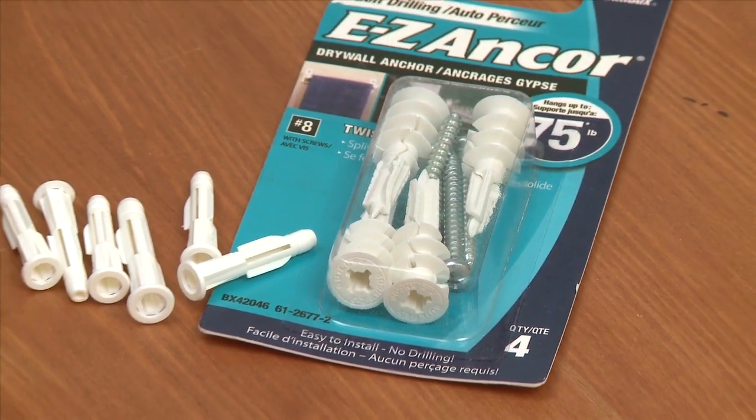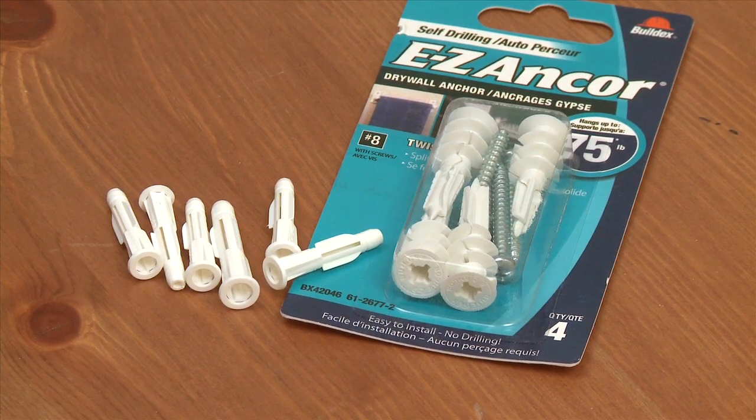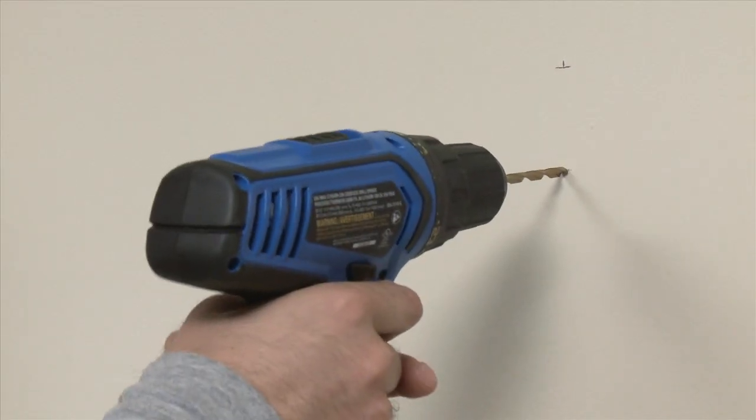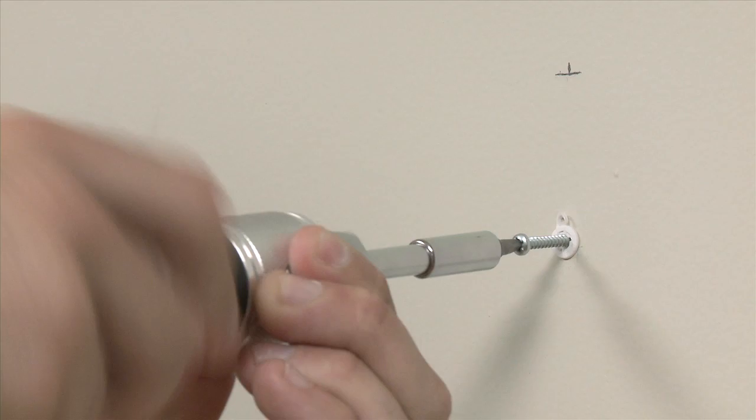Use anchors for extra security if there is no stud where you want to hang the picture. Drill a hole slightly smaller than the plug and tap the anchor into place. Fasten the screw through the plug.